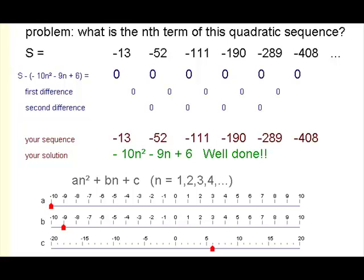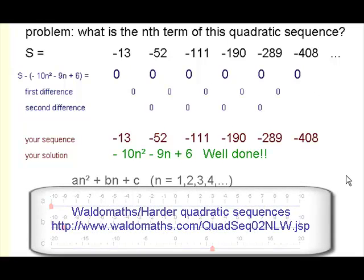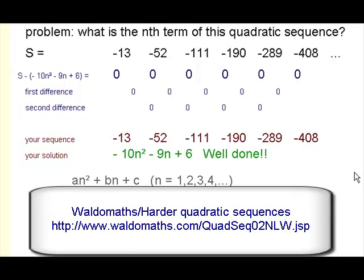So that's quadratic sequences with the method of differences where you work out, first of all, the quadratic term, take that away from your original sequence, then the linear term, take that away and you're left with the constant term which is easy to adjust. So you've found the three numbers for the sequence that you need quite quickly and easily using this Waldomath applet.